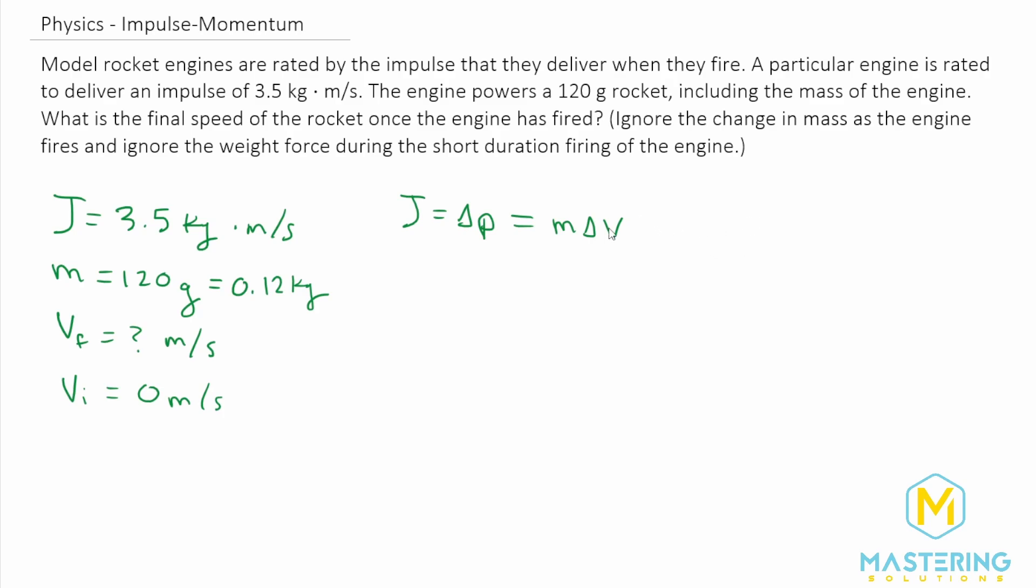So if we expand this out further, let's do a different color. J, since they're all equal to each other, J can also be equal to mass times the change in velocity, right? So now let's break that up even more. So J is going to be equal to the mass times delta, which is going to be velocity final minus velocity initial.